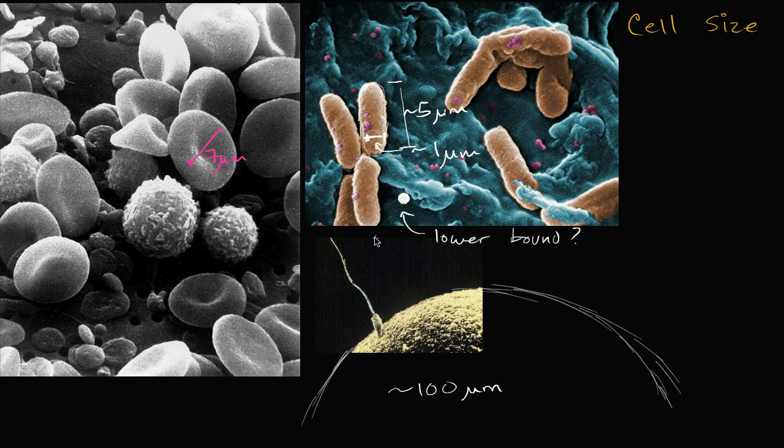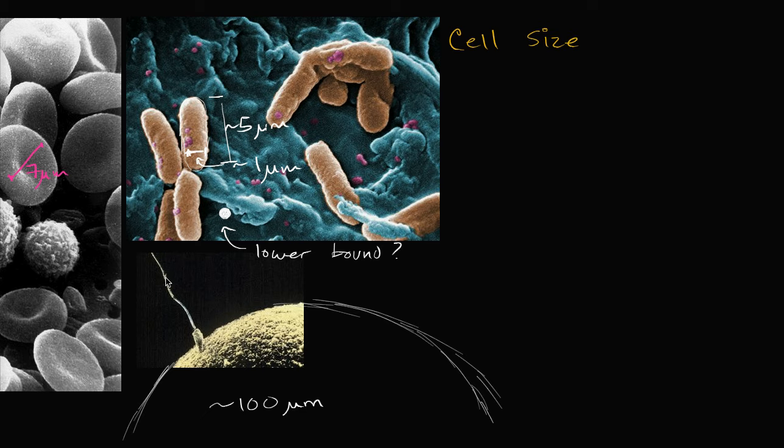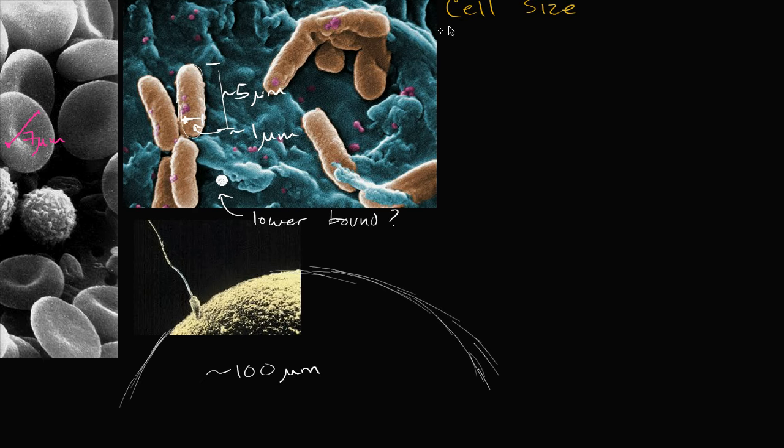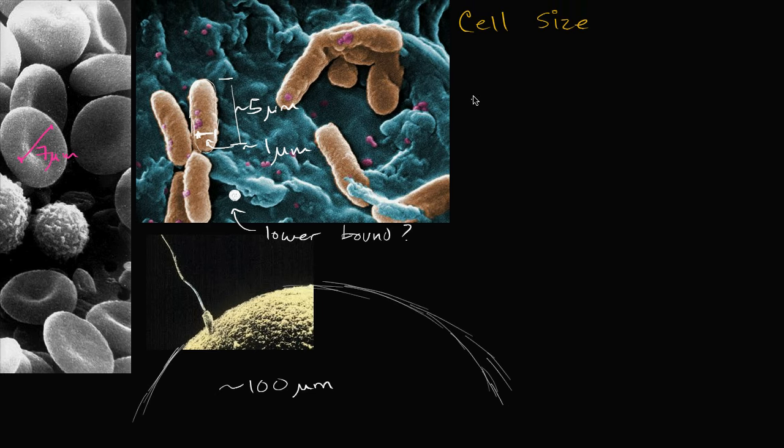But what about the upper bound of cells? Well, one of the things that tends to be the limiting factor, and there's other things as well, but it's the ability for, it's the ratio of volume to surface area. And why does volume, why does that, why does the ratio of volume to surface area matter? Well, because the surface is what interfaces the cell with its surroundings.